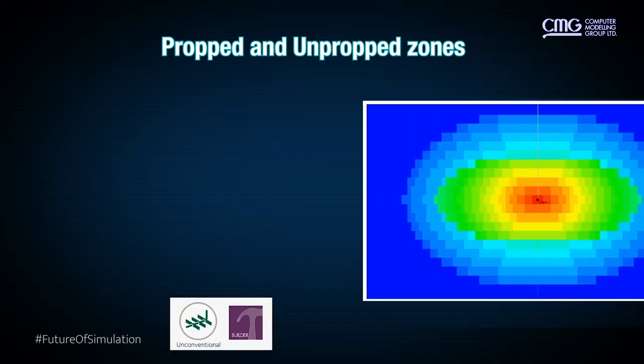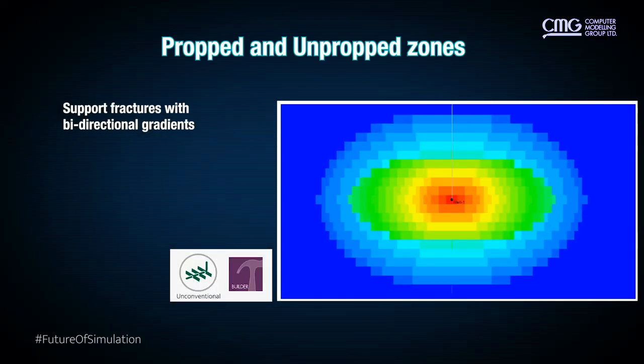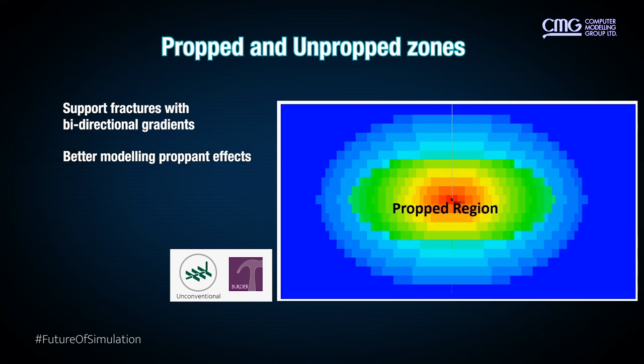Next, we'll move into the unconventional space and how we can better model and understand fractures, specifically the propped and unpropped zones of a fracture. Our latest prop region option will allow you to model fractures with bi-directional conductivity gradients in both the vertical and the horizontal directions. This improves upon our previous feature and will allow proper modeling of the proppant effects where conductivity can change as you move away from the injection point, giving you a better and bigger picture of what hydraulic fractures are about.